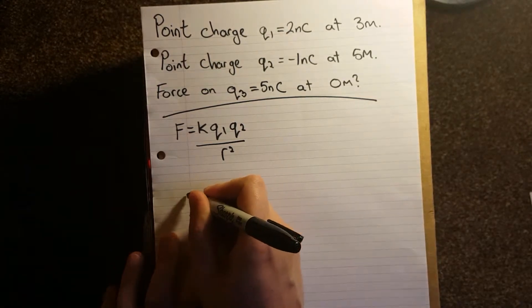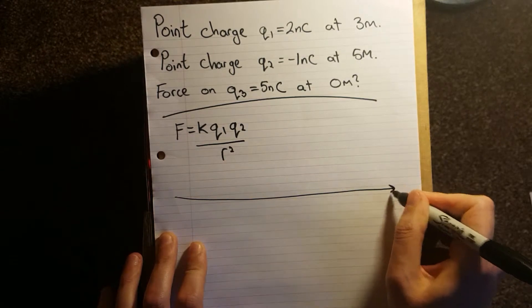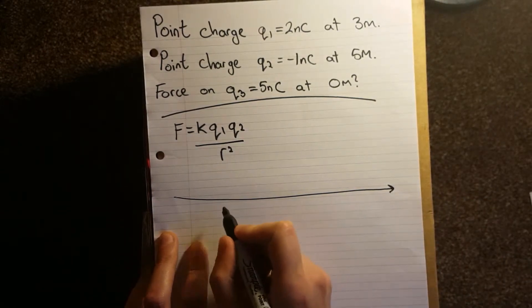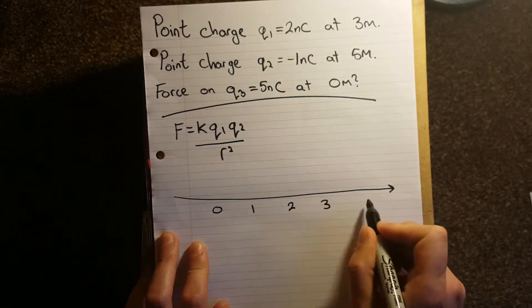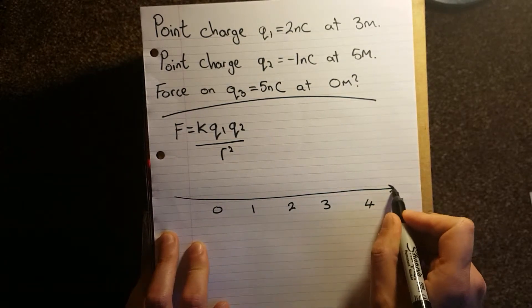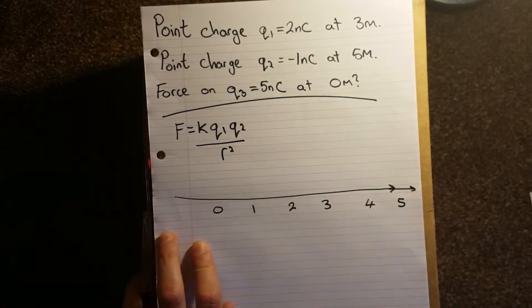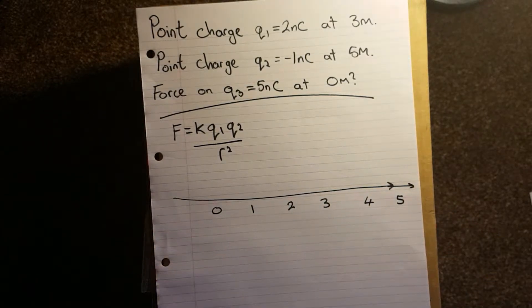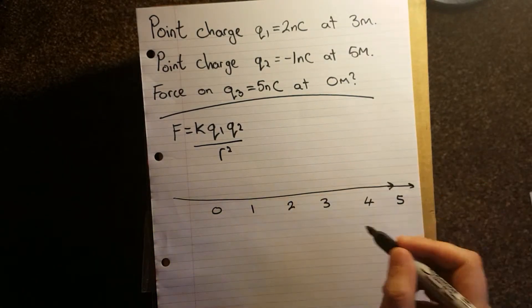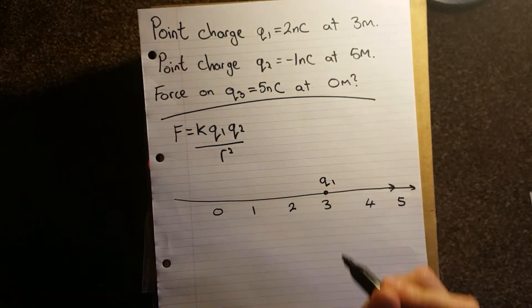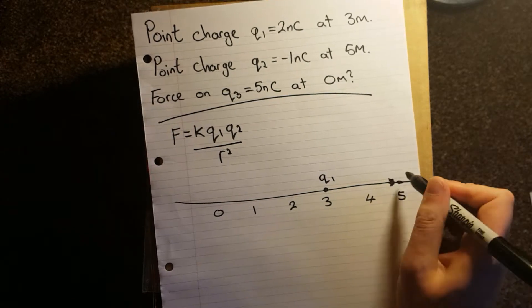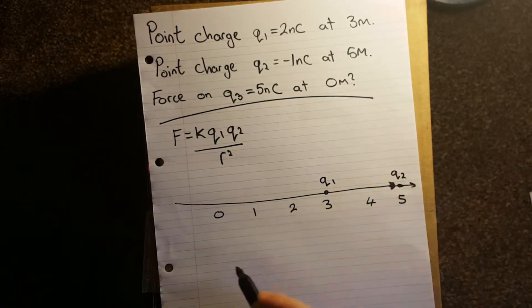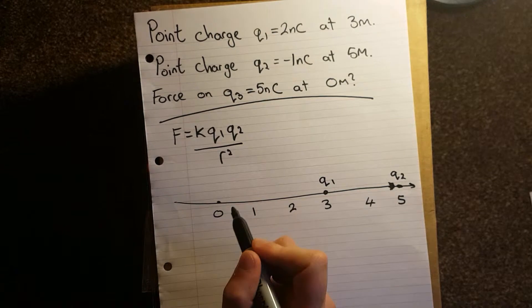So we're going to draw our x-axis. The straightest line ever. And we're going to put zero, one, two, three, four, five. Didn't even fit it on. Q1 is at three metres. Q2 is at five metres. And Q3 is at zero metres.